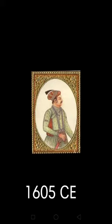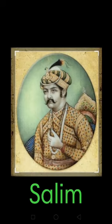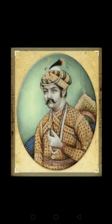Akbar died in 1605 CE. After his death, his son Salim became the ruler under the name of Jahangir.